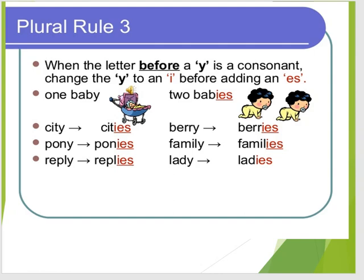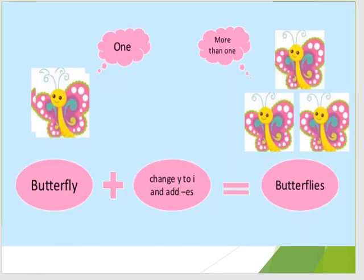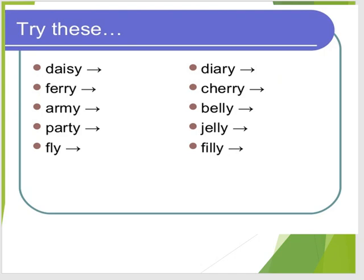And when a noun ends with Y and before Y comes a consonant, in plural we change Y into I and then add ES. For example: cities, ponies, replies, berries, families, ladies. In this example, butterfly — it's one butterfly. But when there are more than one, we must say it in plural. That's why we change Y into I and add ES: butterflies. All these examples end with Y and before Y comes a consonant.